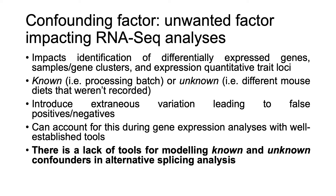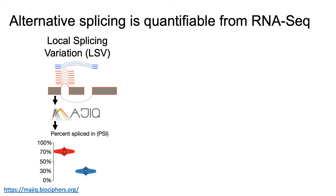We quantify splicing from RNA-seq at local splicing variations, or LSVs. LSVs are loci from which alternative junctions splice from, and we use the MAJIQ algorithm to quantify percent spliced in, or PSI, of spliced junctions at these LSVs. Importantly, our confidence in PSI depends on the number of reads in the LSV — something I'll come back to later.